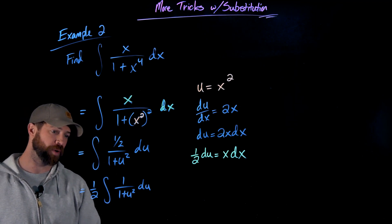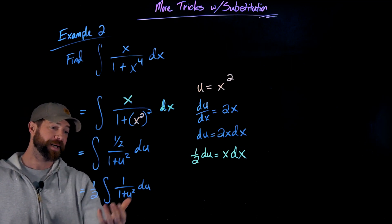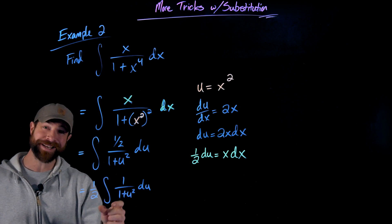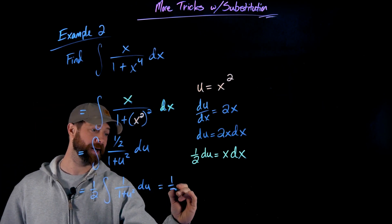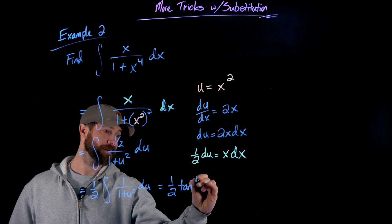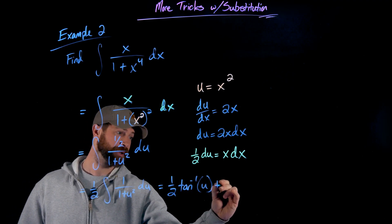In this case, now this indefinite integral, 1 over 1 plus u², this is the tan inverse of u. And so what I'll get here is 1/2 times the tan inverse of u plus c.